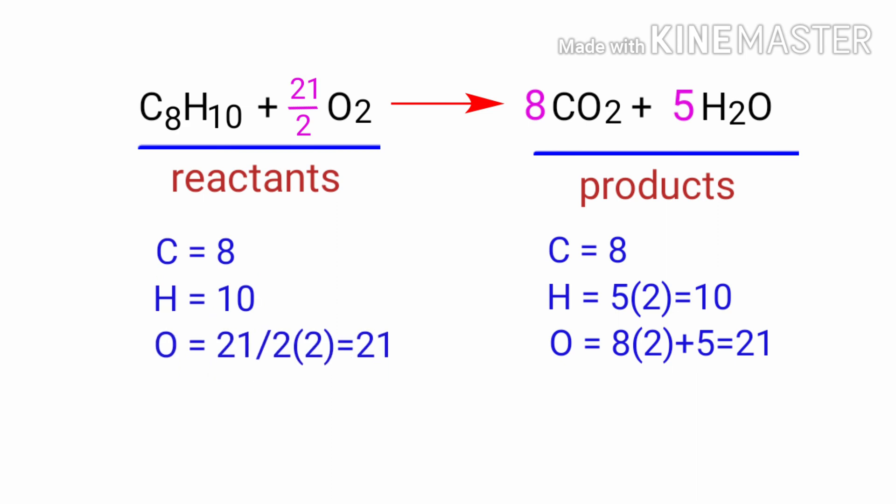In this equation, 21 by 2 is a rational number. We don't use rational numbers for a molecule. So to get whole numbers, we need to multiply the equation by a coefficient of 2.